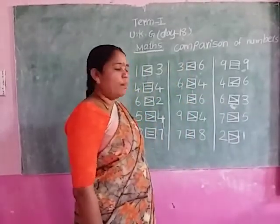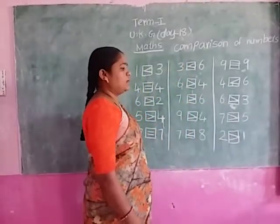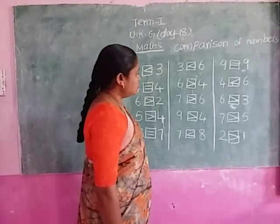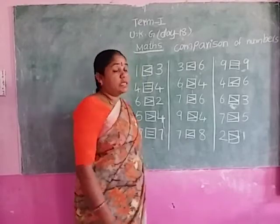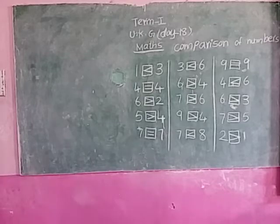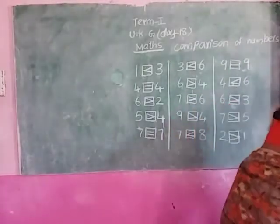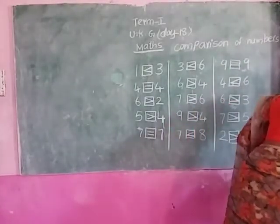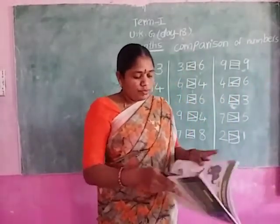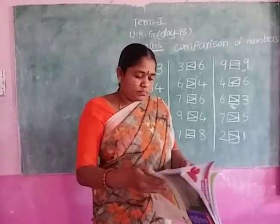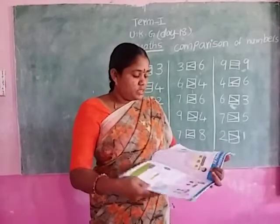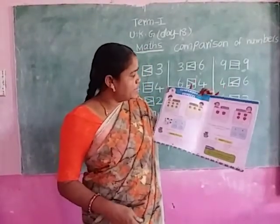So, which side is the greater number — that side will be the open symbol. Okay children, did you understand? You should complete this practice. One more time, I will show comparison of numbers for you.